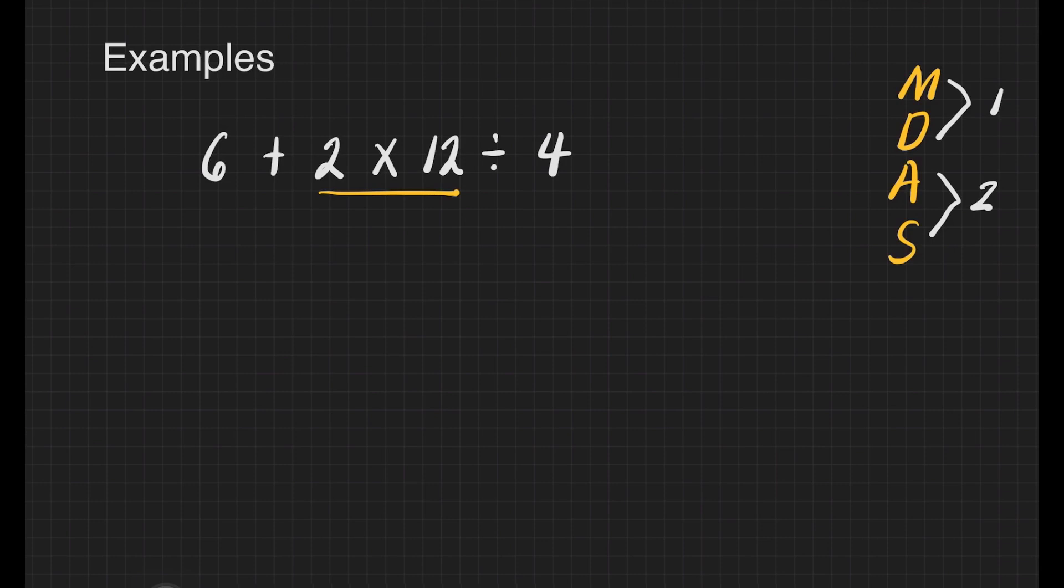All we need to do is copy 6 plus, then do 2 times 12. 2 times 12 equals 24. Then copy the division sign and 4.